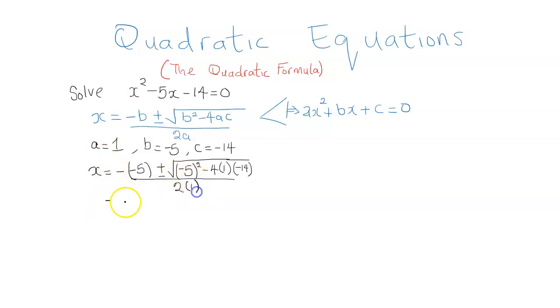So this is equal to minus minus 5 is a positive 5 plus or minus. Minus 5 squared, that's minus 5 times minus 5, so that gives 25. Minus 4 times 1 is minus 4 times minus 14 is going to give positive 56. So all over 2 times 1 is 2. So this is looking good. This is 5 plus or minus, 25 plus 56 is 81 divided by 2.